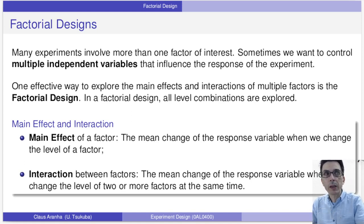Now let's remember what is a main effect and an interaction. The main effect of a factor is the change of the response variable when we change the level of a factor. So when we change the level of a factor and we see the change in the response variable, we are observing the main effect of that factor.